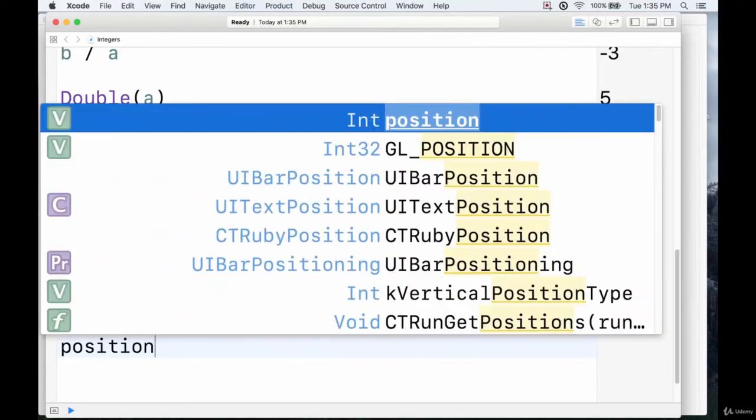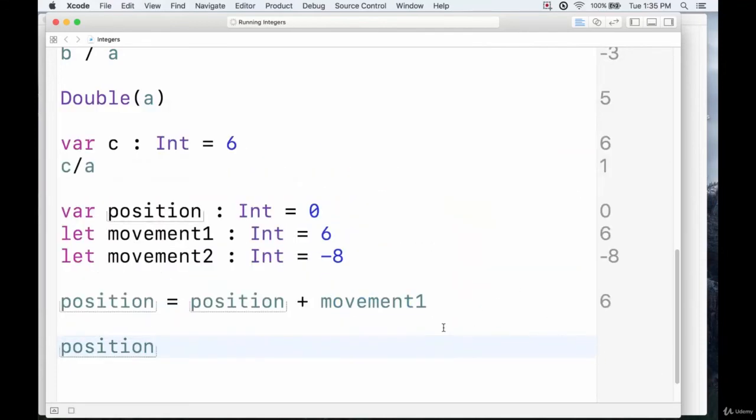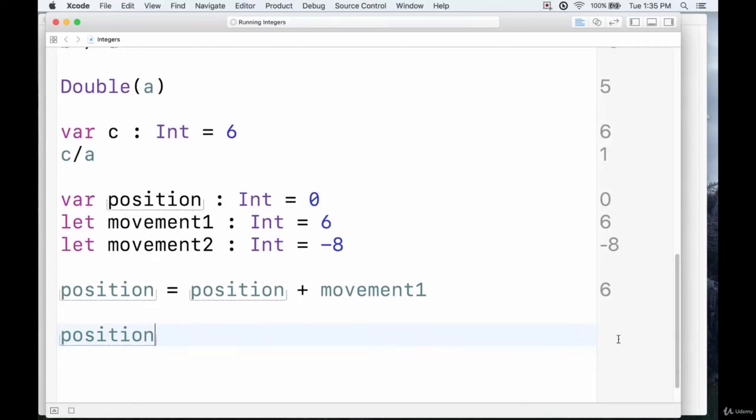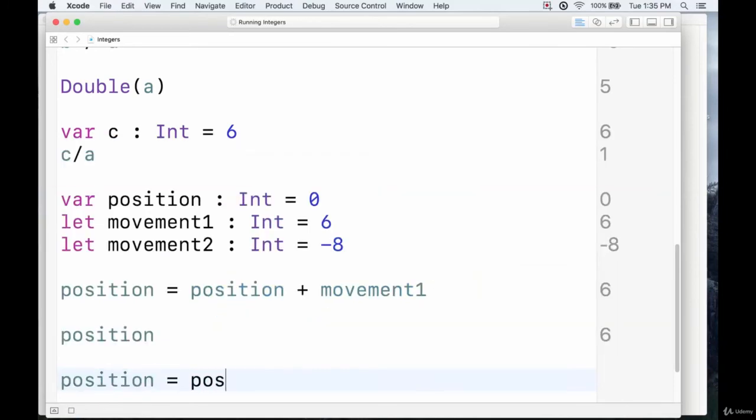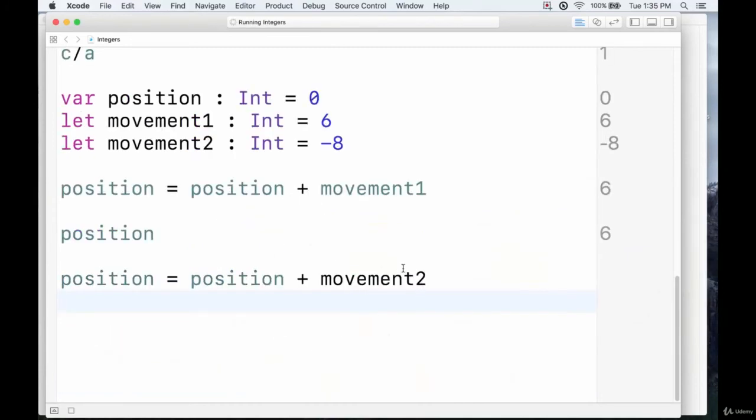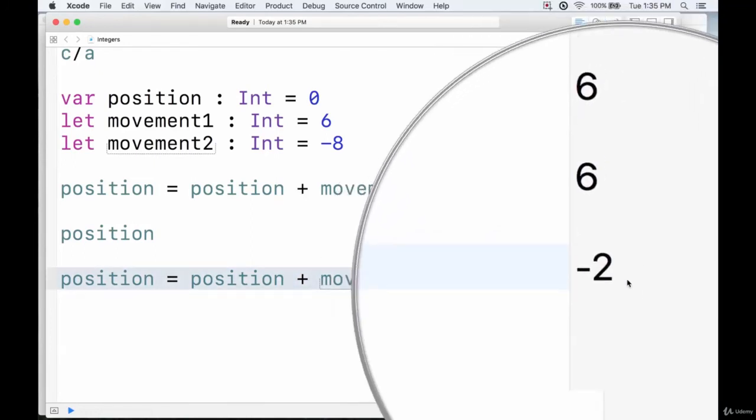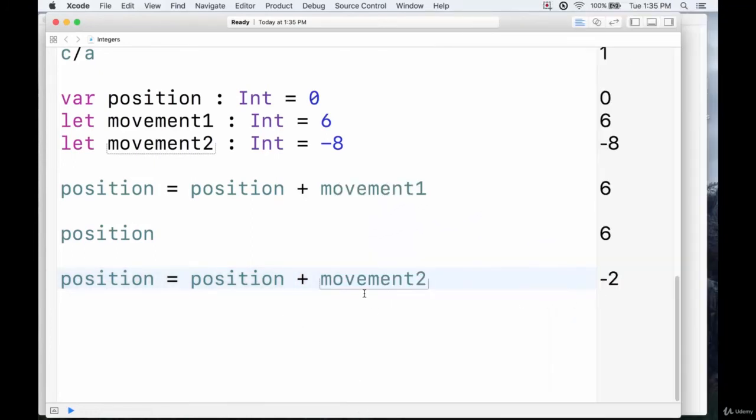So then if we were to print out position now, it should contain the value 6, because we've assigned it a new value up here. And it's just taking a little while to refresh. Yeah, there we go. So we get 6 there. We can also do something like position equals position plus movement2. And it will be basically the same thing. Take this position, which is now 6, and it will add movement2 to it, which is a negative 8. So we should end up with a negative 2. And there we go. There's our negative 2 right there. So this is a good example.